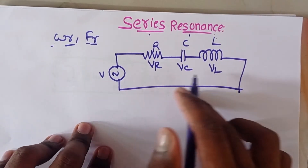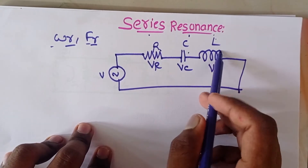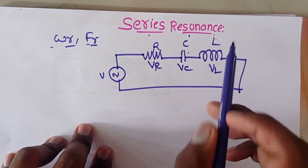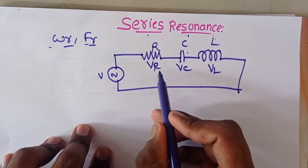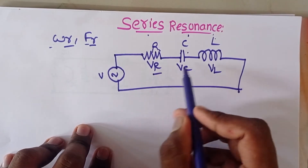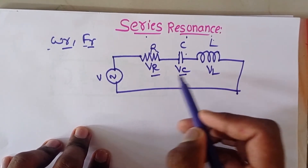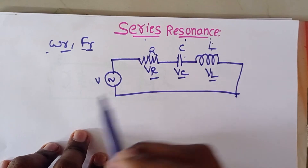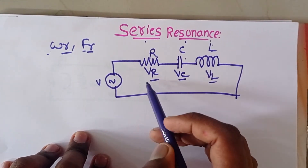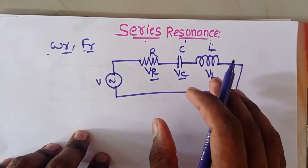First, let's consider this circuit. Here RLC elements are connected in series. The voltage across the resistor is VR, voltage across the capacitor is VC, and voltage across the inductor is VL.